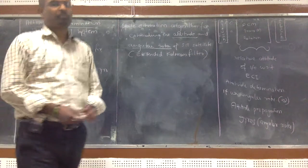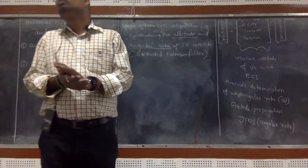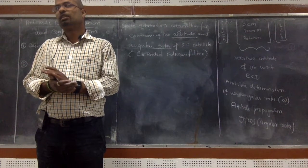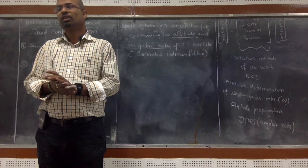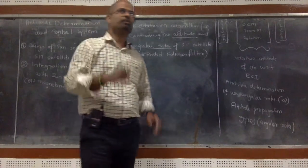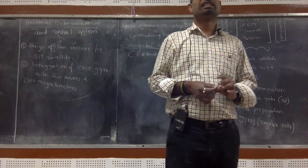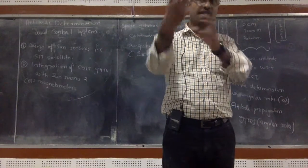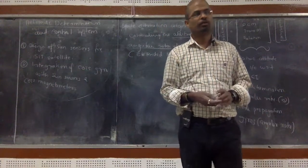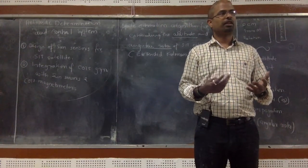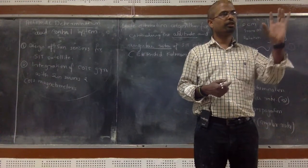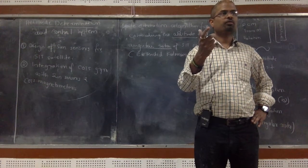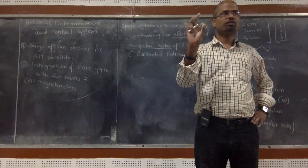Now, what is the state of the system? The values of the different parameters. For example, can one system have two mathematical models? It depends on what state you are trying to extract as the output. For example, a satellite will have a translational mathematical model. What are the translational states? Translational motion states: position, velocity, acceleration.